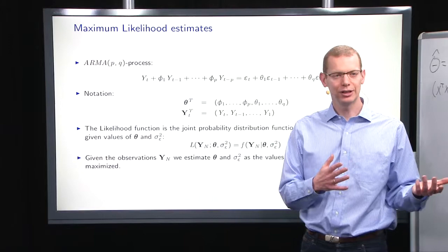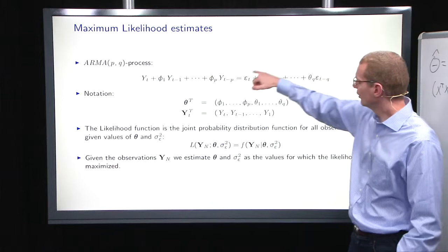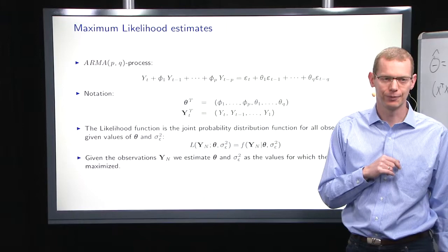When you have a moving average part in the model as well — in the general ARMA model where you have a polynomial in theta, a polynomial in B, the backward shift operator — then we have to do something different.